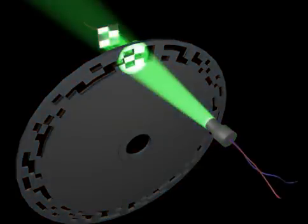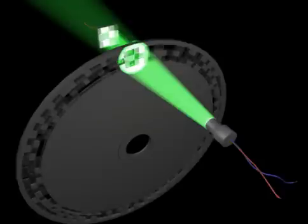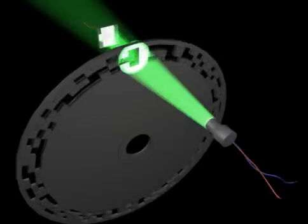Because it is an absolute encoder, each column of slots represents a unique angular position on the wheel. For example, this position is different from the next position, and so on throughout the disk.